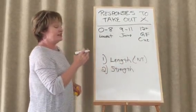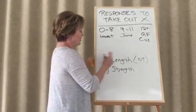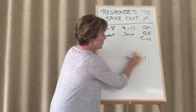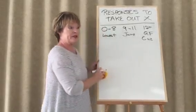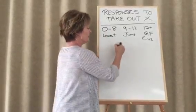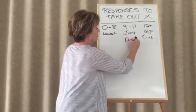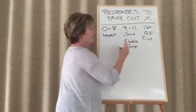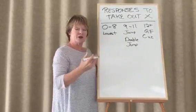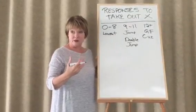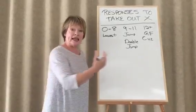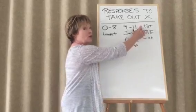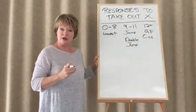So what about a double jump hand? So we don't use double jump to show extra value. We show a cue bid to show extra value. So a double jump, we'll put that right here in the middle. Double jump would mean if it went one club, double, pass, three hearts. That's a double jump. That shows length and probably not much high card value. It has to be less than 12 because we're required to cue bid with 12.